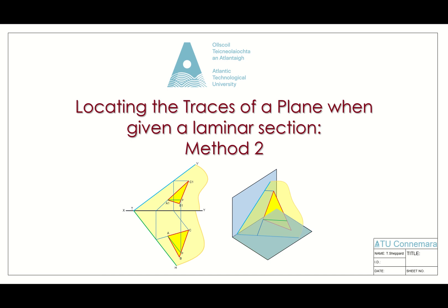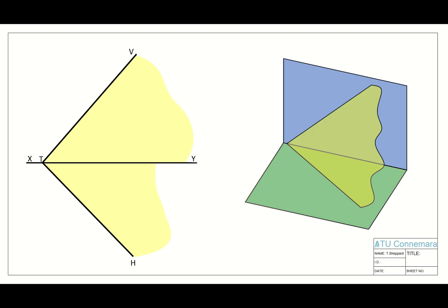Before we do that, there's just one piece of background information that we've seen already but which the second method uses. The idea is that if you have a plane with a vertical trace and a horizontal trace, and you draw a series of parallel planes — imagine a level of water rising up parallel to the horizontal plane — the watermark or trace left as it rises will always be parallel to the horizontal trace.